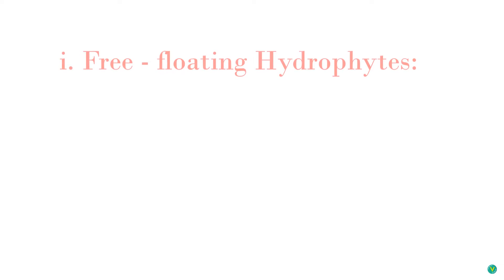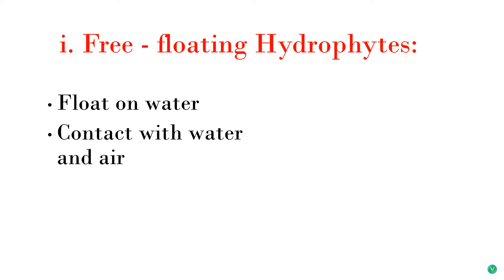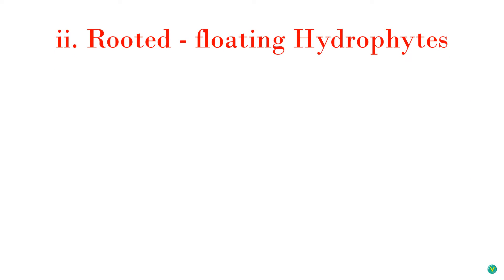First, free floating hydrophytes: these plants float freely on the surface of water. They remain in contact with air and water but not soil — meaning these plants are not attached to soil and their roots are just above the soil. Second, rooted floating hydrophytes: the roots of these plants are fixed in mud, but the leaves and flowers are floating on the surface of water.